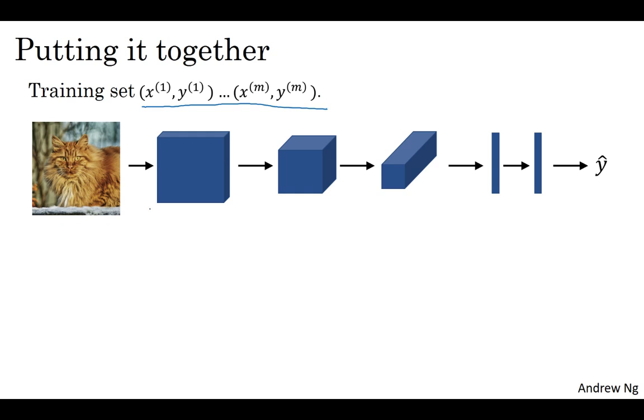And let's say you've chosen a convolutional neural network structure, maybe start with the image and then having convolutional and pooling layers and then some fully connected layers followed by a softmax output that then outputs y hat.